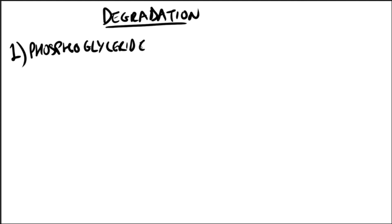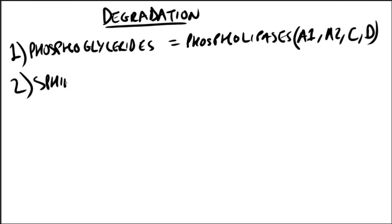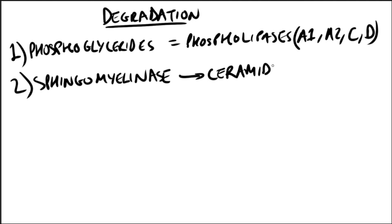The degradation of phosphoglycerides is performed by phospholipases found in all tissues and in pancreatic juice. There are different types: phospholipases A1, A2, C, and D — we are mainly interested in A1, A2, and C. Sphingomyelin is degraded by the lysosomal phospholipase known as sphingomyelinase, which hydrolytically removes phosphorylcholine, leaving a ceramide. The ceramide is in turn cleaved by ceramidase into sphingosine and a free fatty acid.